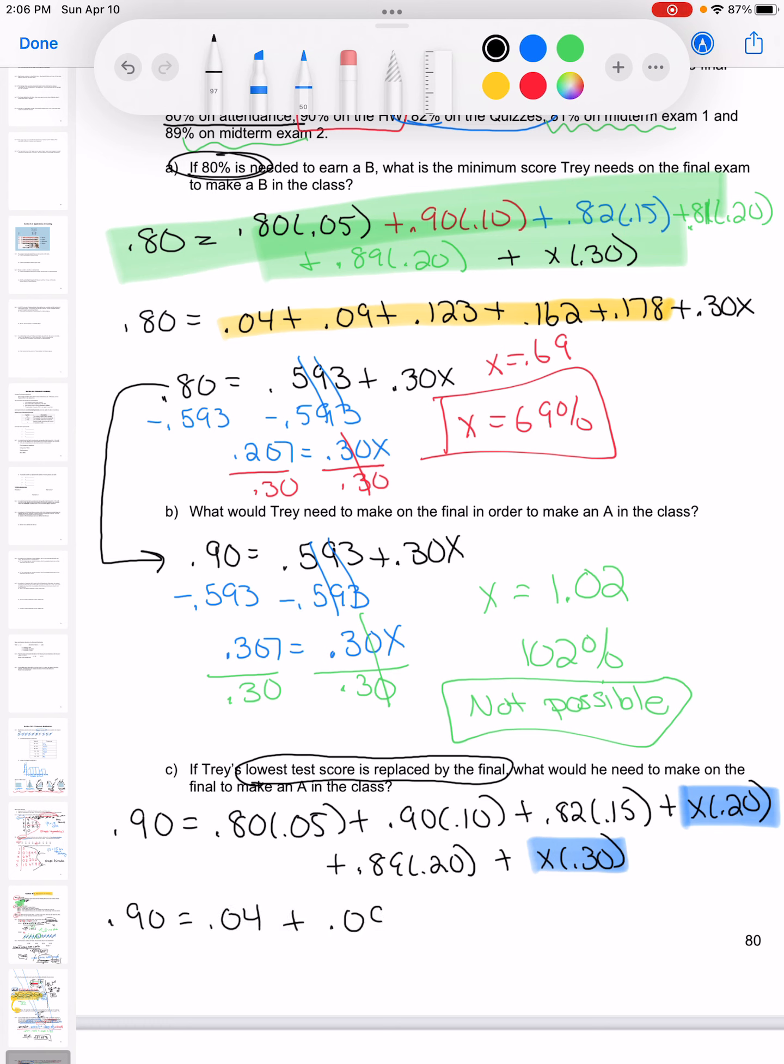So you can type these in one at a time, or you can type them in all together either way. But I do have those two now with the X. So I'm going to get 0.90. Adding all the ones without the X, I get 0.431. Adding the X's together, I get 0.50X. And then we're going to do those same steps to solve. So just trying to get X by itself. I'm going to get X is equal to 93.8%. So if Trey were to make a 93.8 on the final, it would go back and replace his 81, his first test grade, and he would get an A in the class.